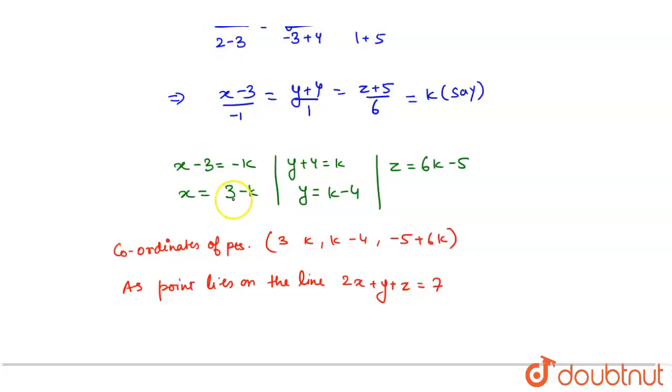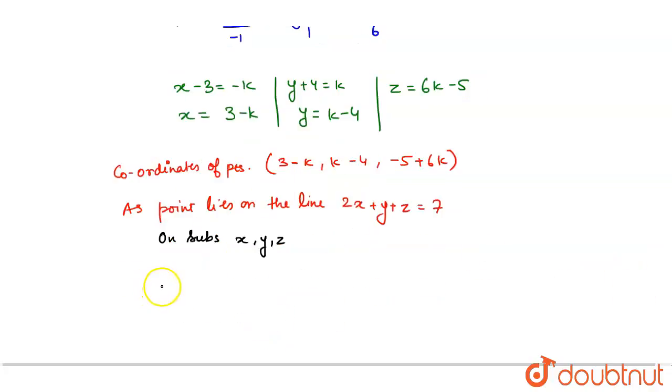On substituting x, y, z with these points, what do I get? I get 2(3 - k) + 1(k - 4) + 1(6k - 5) = 7.